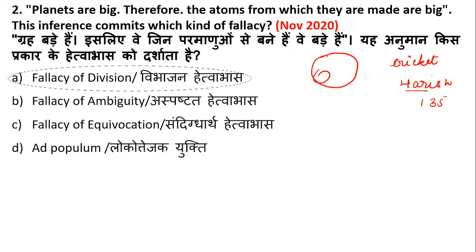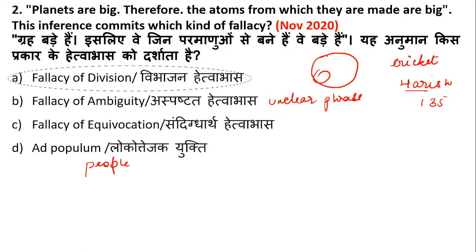Fallacy of ambiguity means that it involves an unclear phrase — if the sentence is not clear. Equivocation is when words with the same meaning are used in different senses. Ad populum means that what the majority of people do is not necessarily the right thing — for example, if everyone is buying iPhone, then I also buy iPhone. That is wrong. We should act according to our own situations, not just because everyone is doing it. This is the ad populum fallacy.